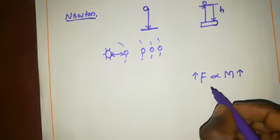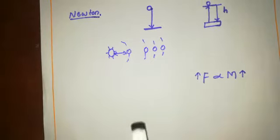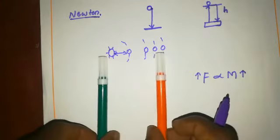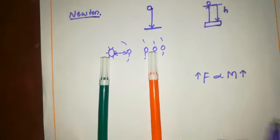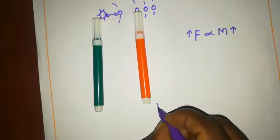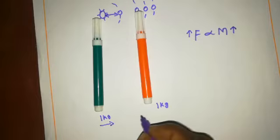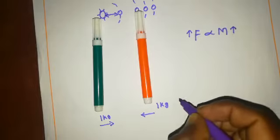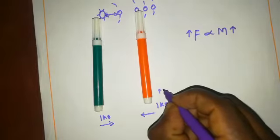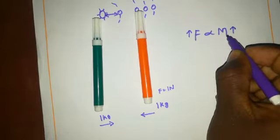I will explain with an example. Consider two objects — this is one object and this is another object. Each having a mass of 1 kg. The force is acting in this direction between them. Since force is directly proportional to mass, F equals 1 Newton for each. When I increase the mass of this object to 2 kg, the force becomes 2 Newtons.